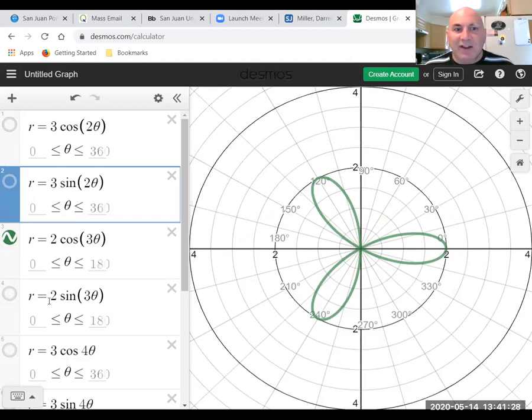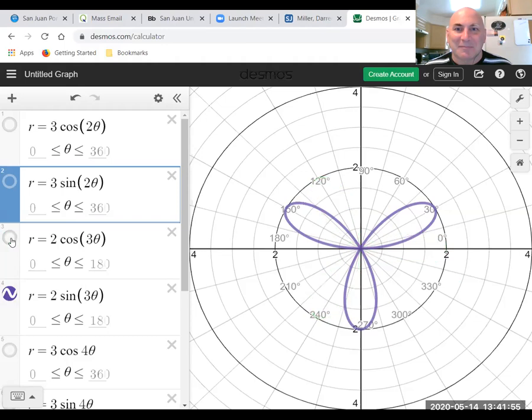Now, r equals 2 sine 3 theta. You'll notice this one, the petal is centered not at 0, but at 30 degrees. And why do you think that is? And the answer is 3 times 30 is 90. And 90 degrees is where sine reaches a maximum. The fact that this petal is on the y-axis is coincidental, really. What's important is that the petal is not centered at 0. It's centered at 30 degrees. And there are three petals. So they'll be centered 120 degrees apart.